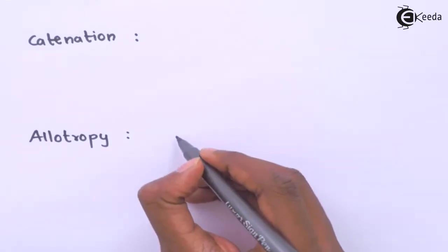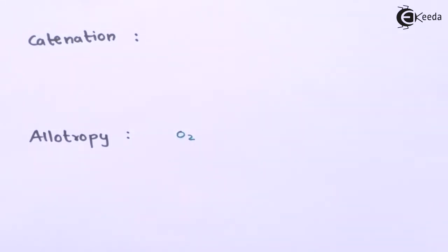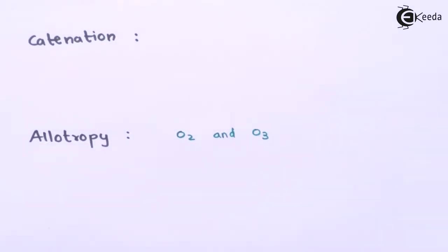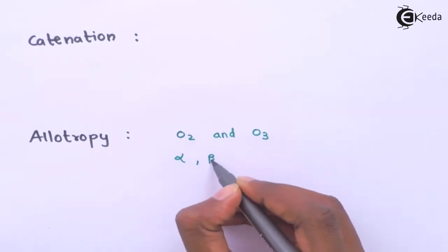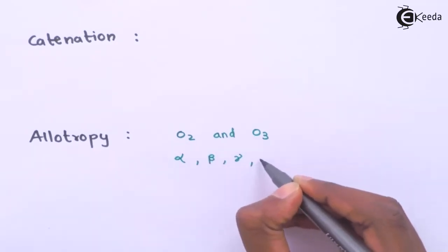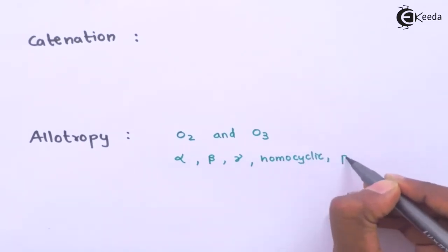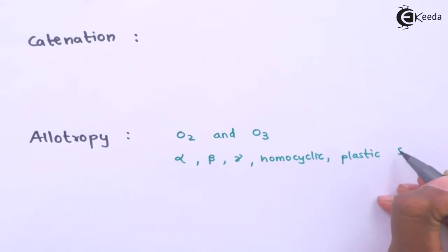The next point is allotropy. Oxygen has 2 allotropes: O2 (dioxygen) and O3 (ozone). Sulfur has many allotropes, including alpha, beta, gamma, homocyclic, plastic sulfur, and others.